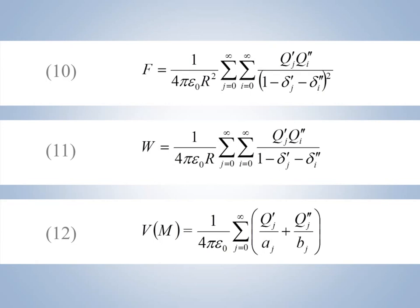For the electrostatic interaction between the spheres S1 and S2, we get for the value of the force of interaction formula 10, for the potential energy of the interaction formula 11, and for the potential at an arbitrary point M of the electrostatic field formula 12.